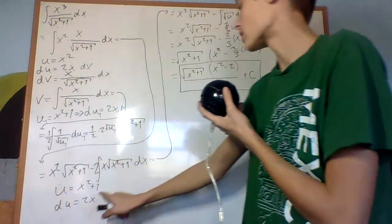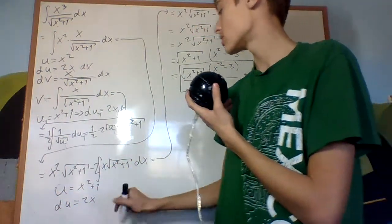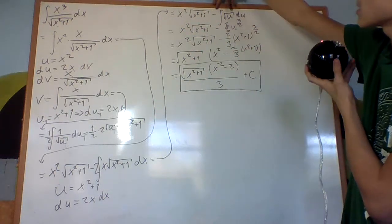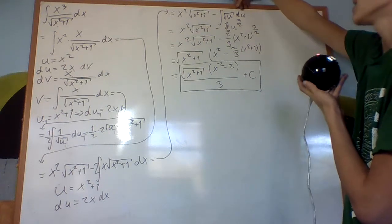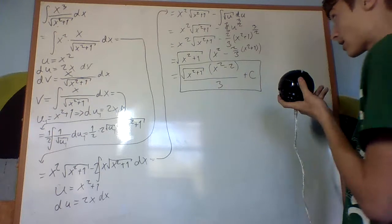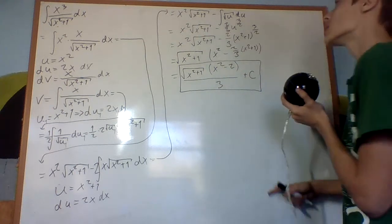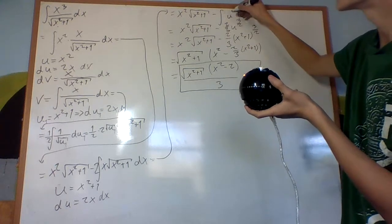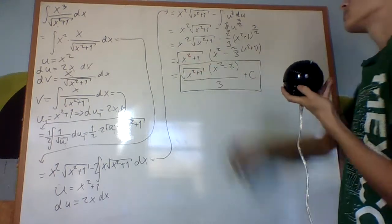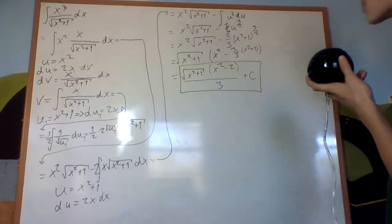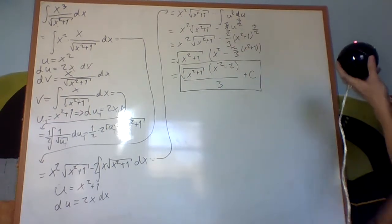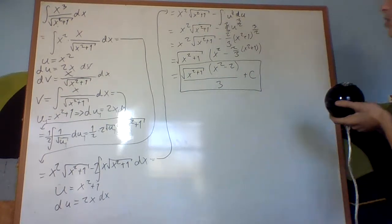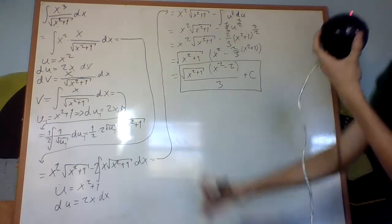Making the substitution u equals x squared plus 1, du equals 2x dx, we get x squared times the square root of x squared plus 1 minus the integral of the square root of u du, which is pretty easy: x squared times the square root of x squared plus 1 minus 2 thirds u to the 3 halves, giving x squared times the square root of x squared plus 1 minus 2 thirds times x squared plus 1 to the 3 halves. Factoring out the square root of x squared plus 1, you get the square root of x squared plus 1 times x squared minus 2 over 3 plus C.